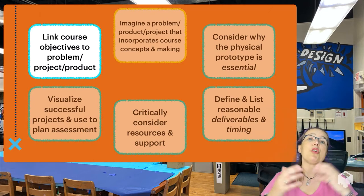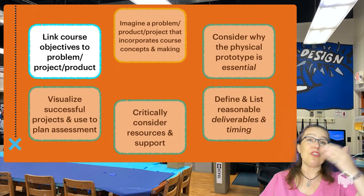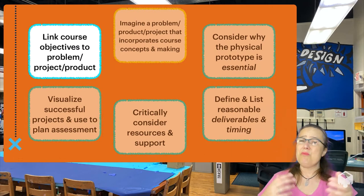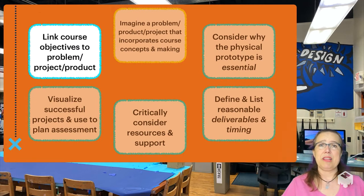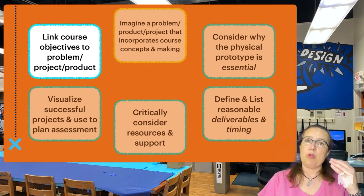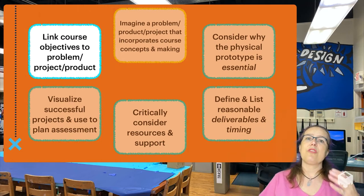Do you hit a number of important course objectives when you're doing this? Does this enable you to have bonus additional course objectives that you hadn't been working on before? If there's no or just one course objective that you can hit with your maker project, you might want to consider moving this to outreach or to another class where it is a better fit. But really, you want to be able to hit two, three, or four course objectives in a good PBL maker project.